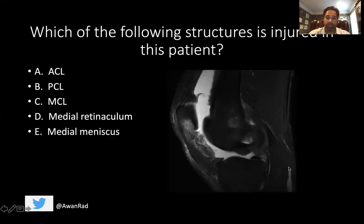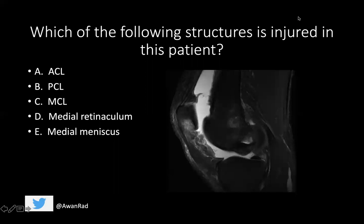I want to start with this question: which of the following structures is injured in this patient? Is it the ACL, the PCL, the MCL, the medial retinaculum, or the medial meniscus? Which structure is injured in this patient?